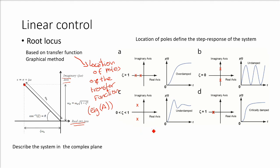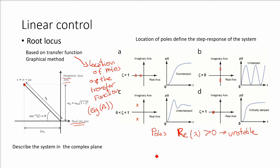You can see that when the poles are on the negative real axis, the response of the system will be stable, which means that it will converge to a value. However, when the poles are on the right side plane, the response of the system will be unstable. Now, looking at the imaginary axis, you can see that the value of zeta will define how much damping the response of the system will have. So the method of finding a controller will be to set a control system that locates the poles in the left half side of the plane, so that it drives the system stable.